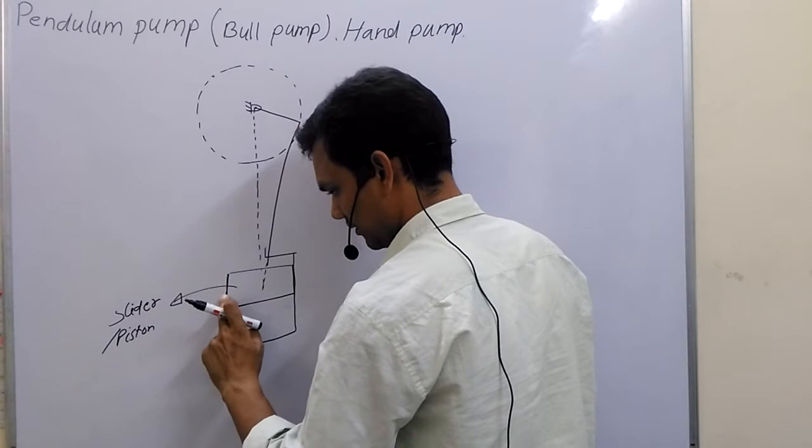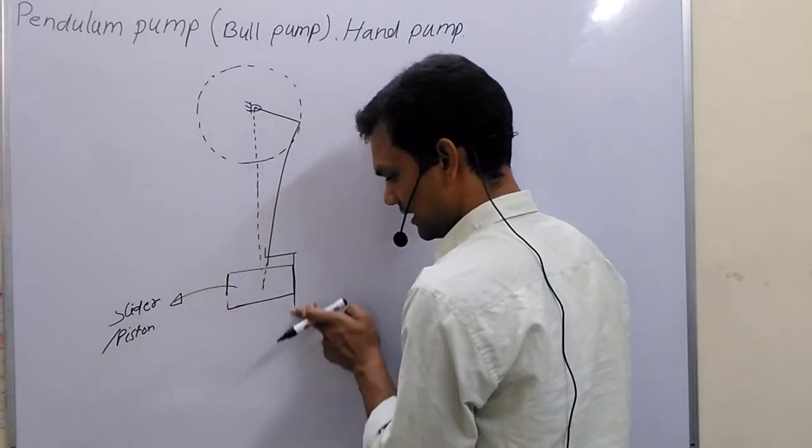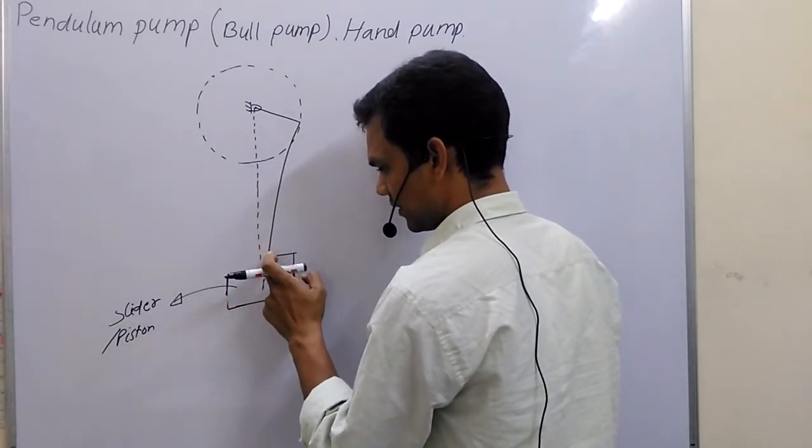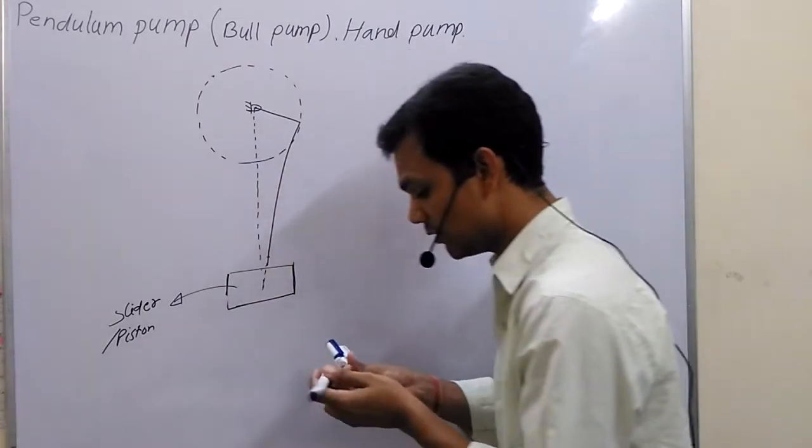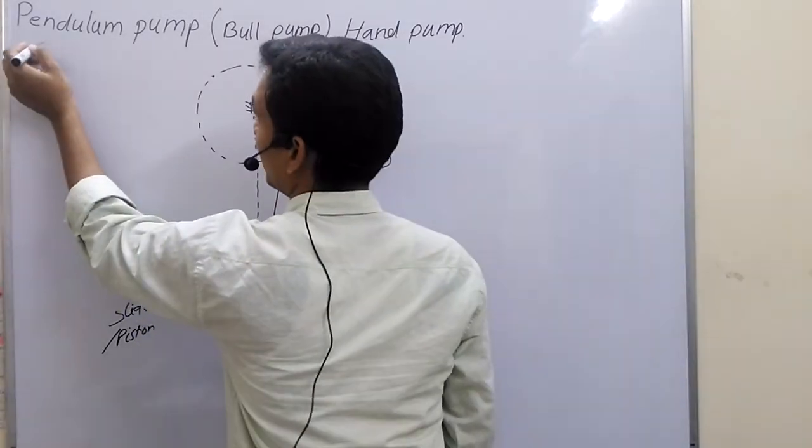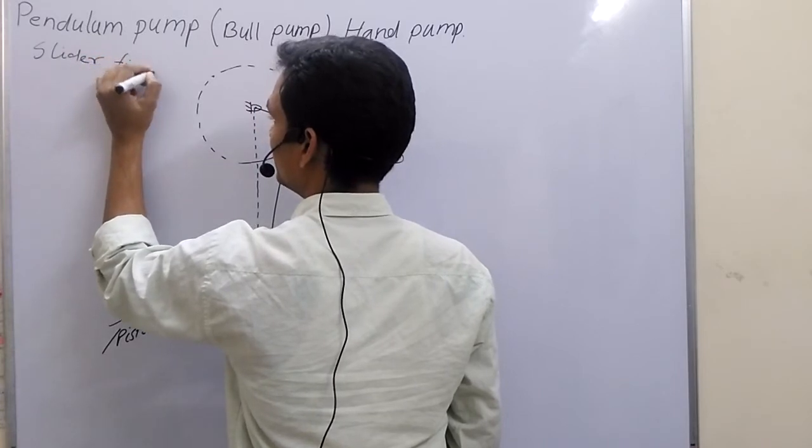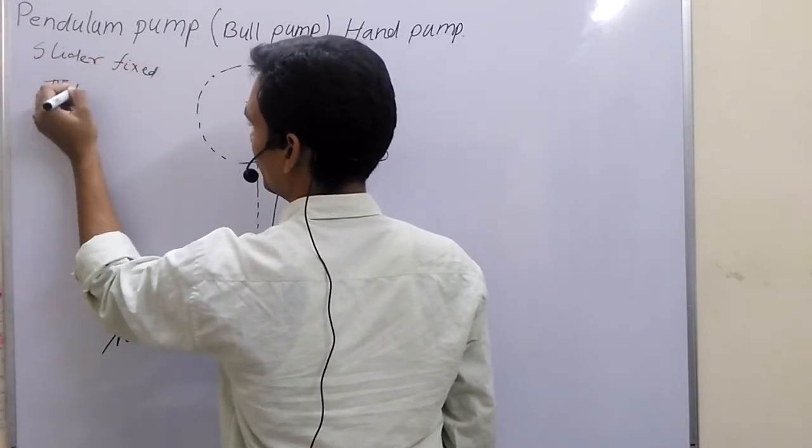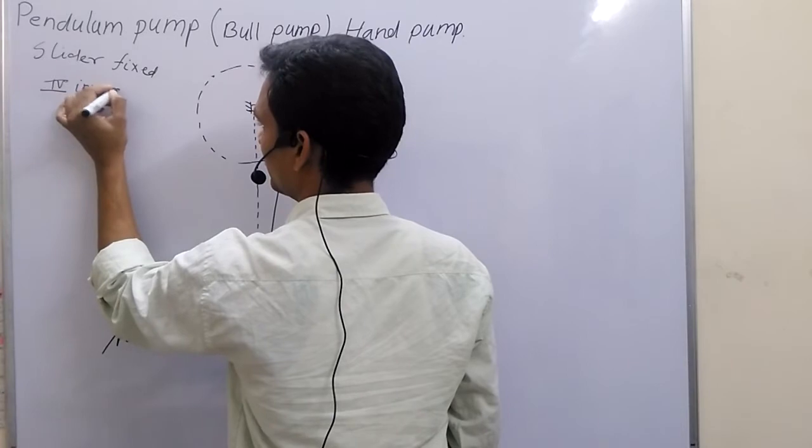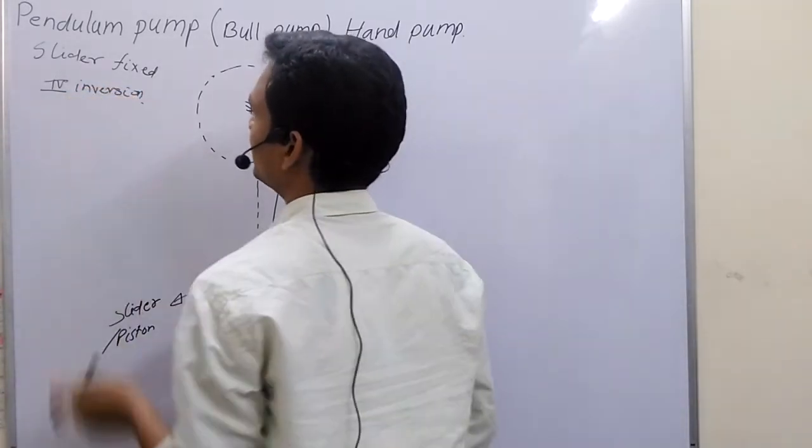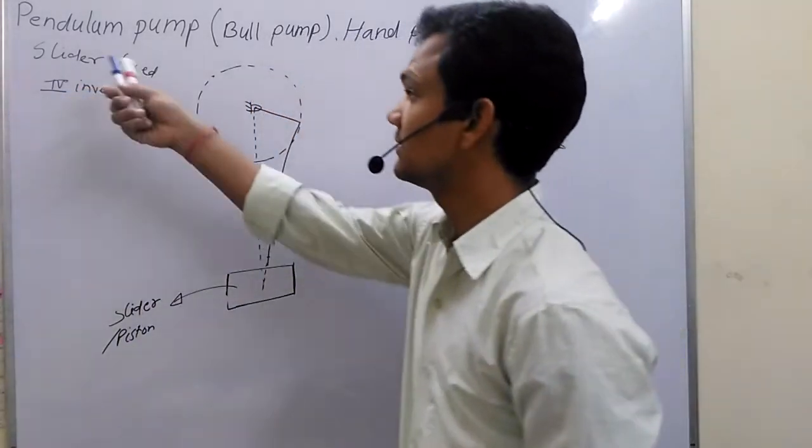First I remove the cylinder. In this case, you have to remember one thing: slider is fixed. And this is fourth inversion of single slider crank mechanism. In this slider is fixed.